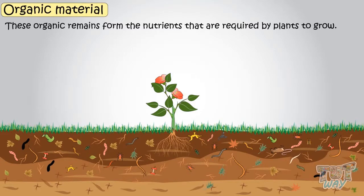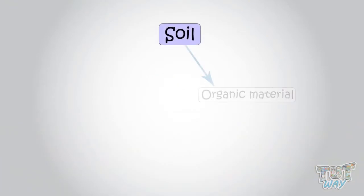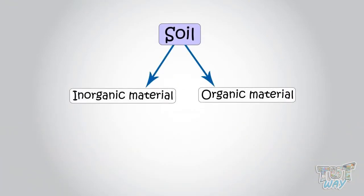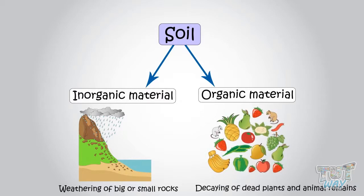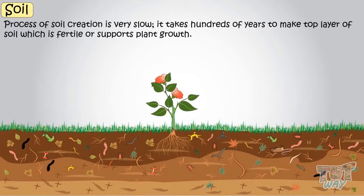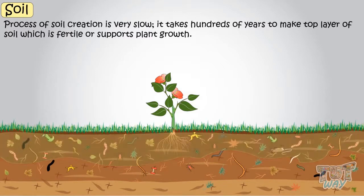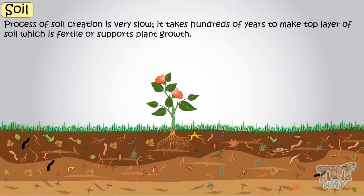So kids, soil is a mix of organic and inorganic material, which is mainly formed by weathering of big or small rocks and decaying of dead plants and animal remains. The process of soil creation is very, very slow. It takes hundreds of years to make a top layer of soil which is fertile and supports plant growth.